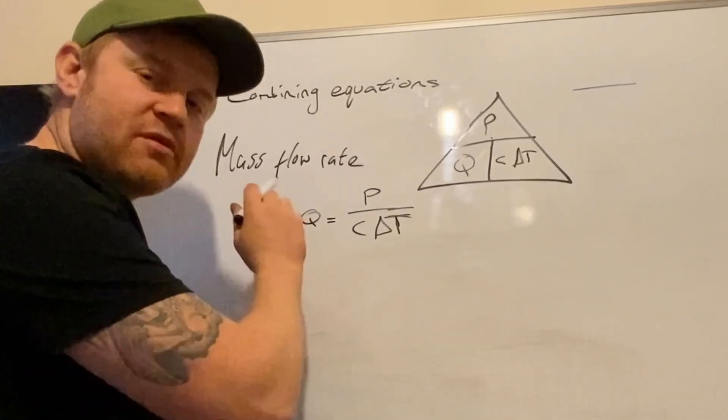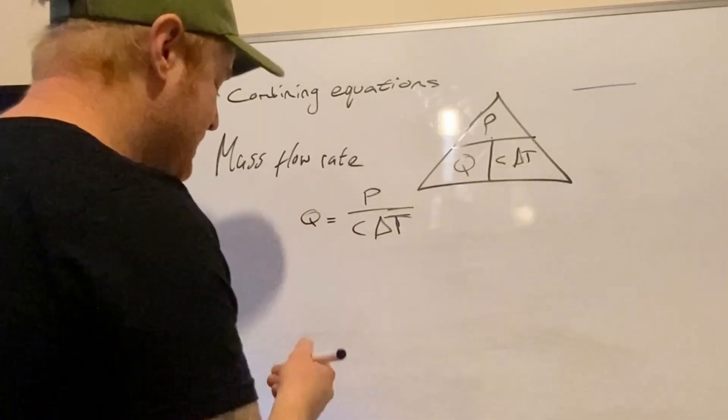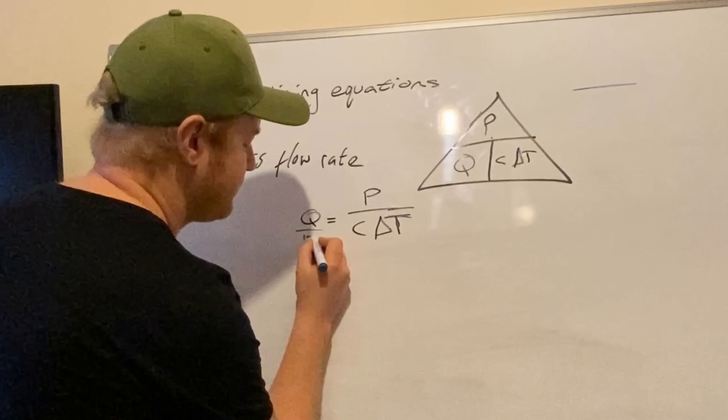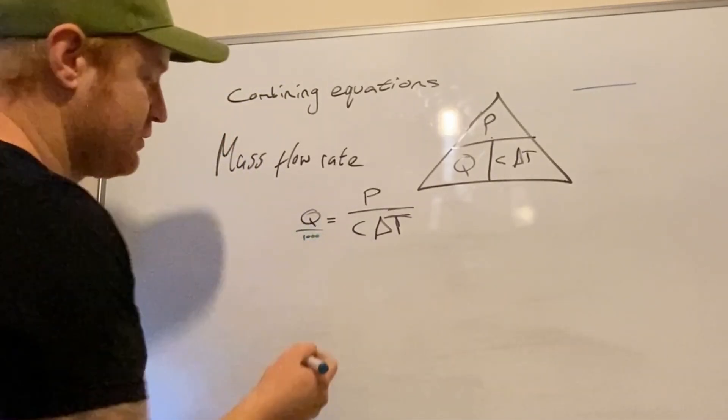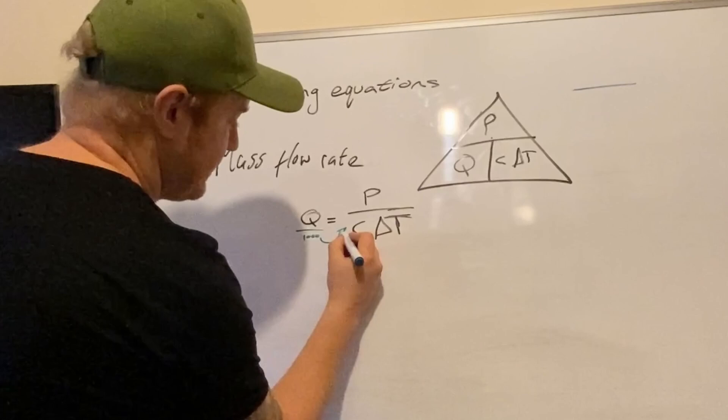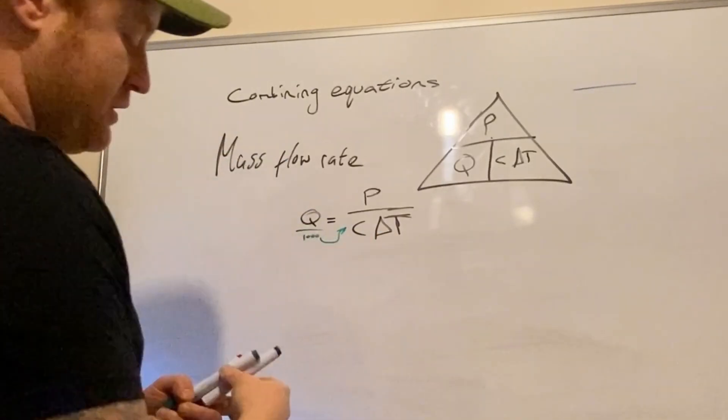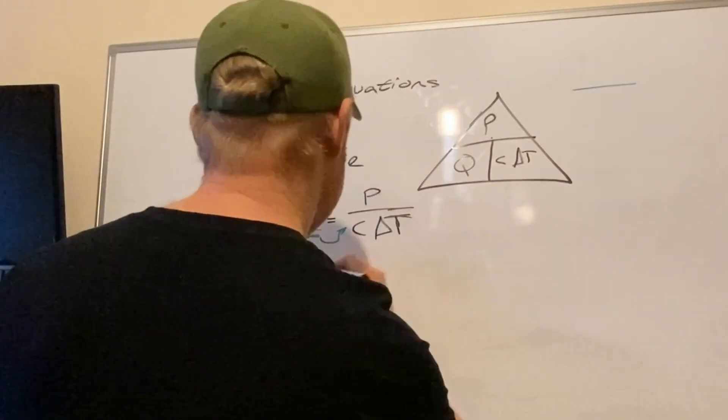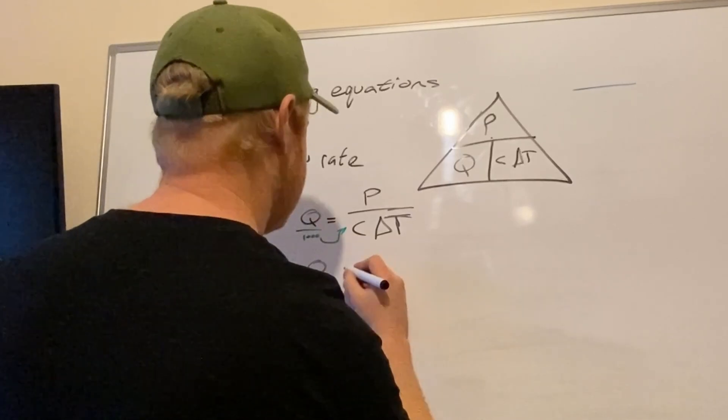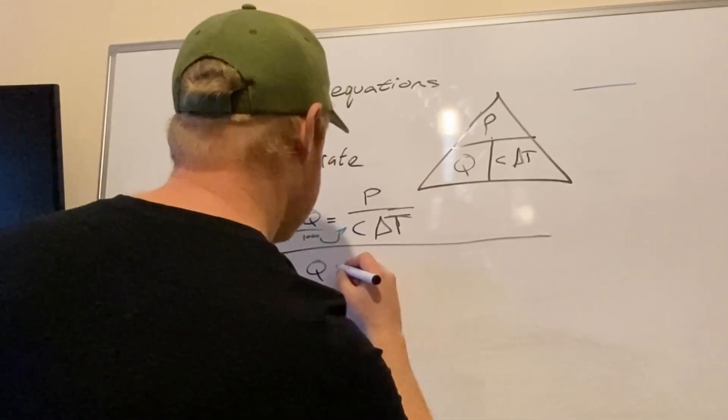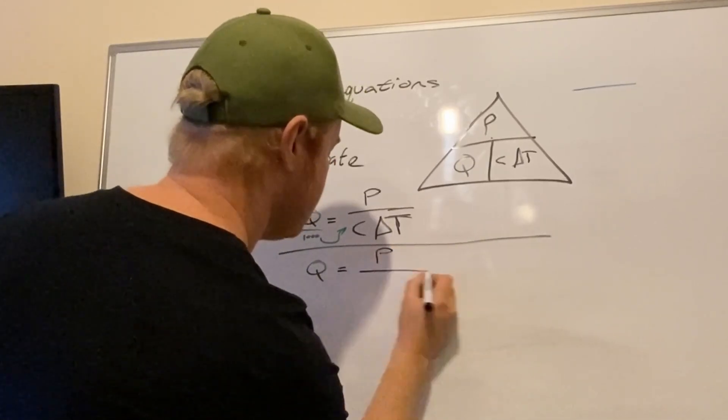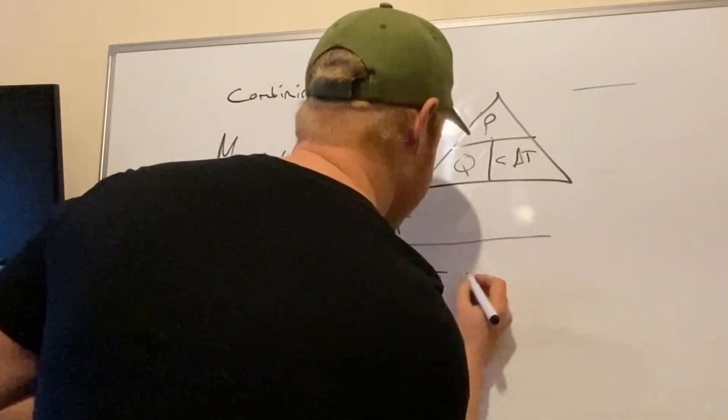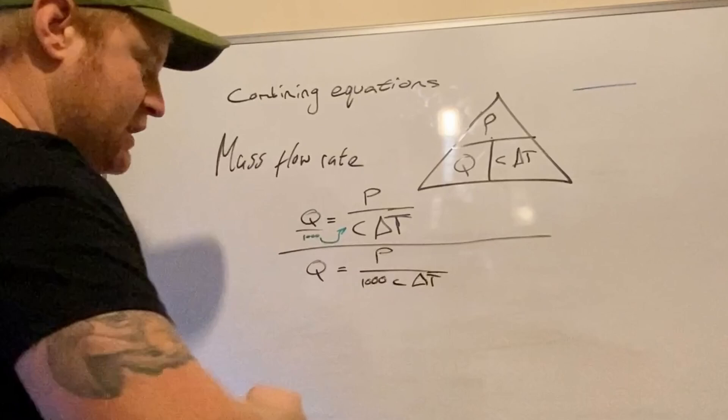However, when we use this in our pipe sizing calculation, we use meters cubed per second, which actually is liters per second divided by 1000. So what we want to do is put this here. So to get flow in meters cubed per second, we go: q equals power divided by 1000 times specific heat capacity times delta T. So there's your meters cubed per second. That's your mass flow rate equation.